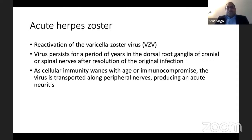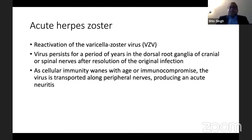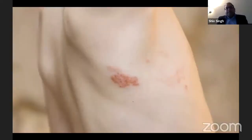When the patient's immunity goes down because of age or immunocompromise, the virus gets transported along the peripheral nerve and produces neuritis. That is why you see it in only a single dermatome, though multiple dermatomes can be involved — it follows the dermatome supplied by a particular nerve.